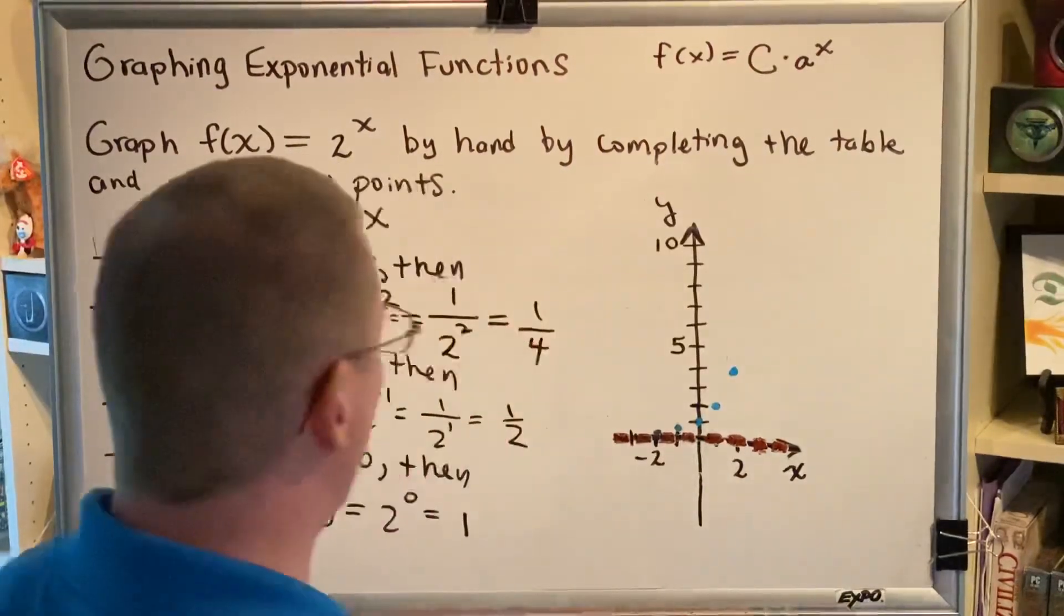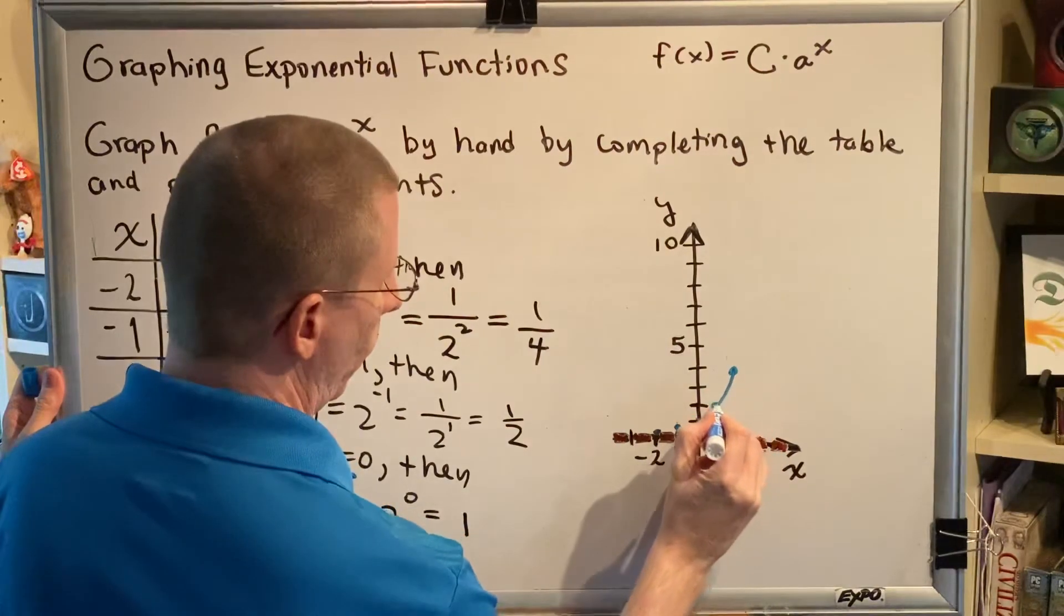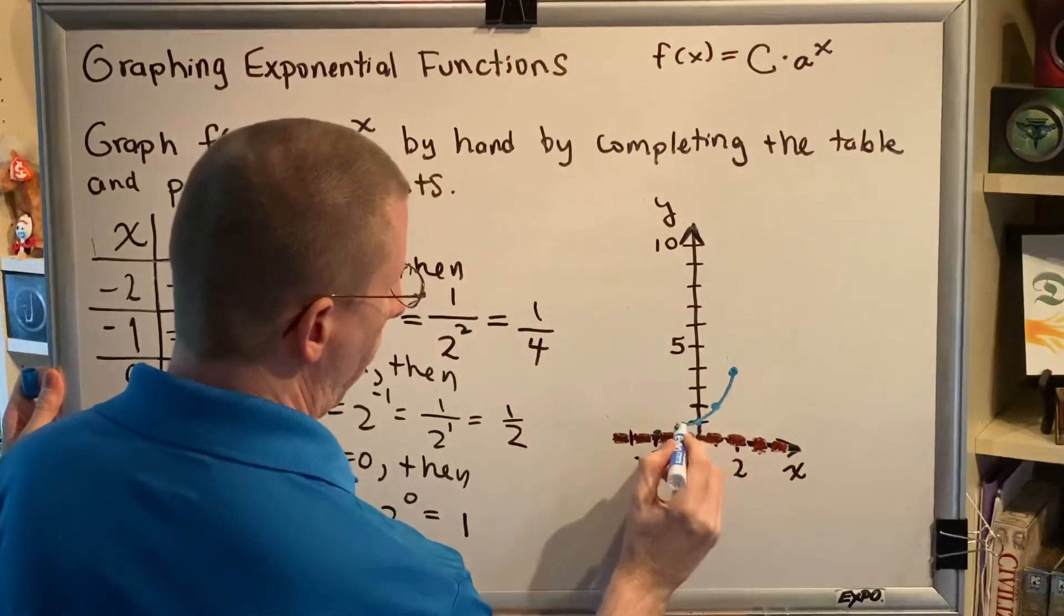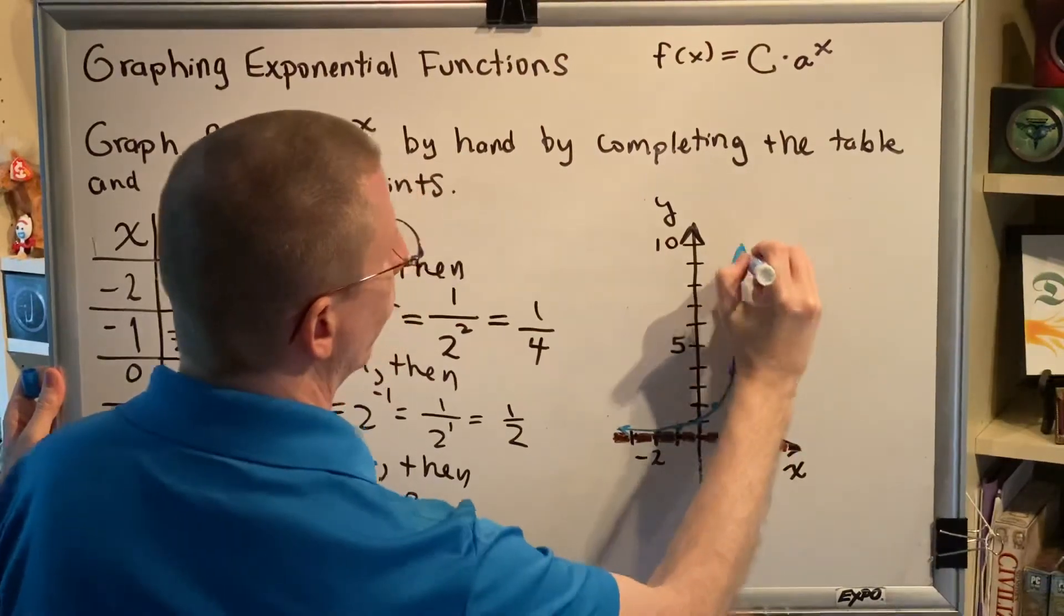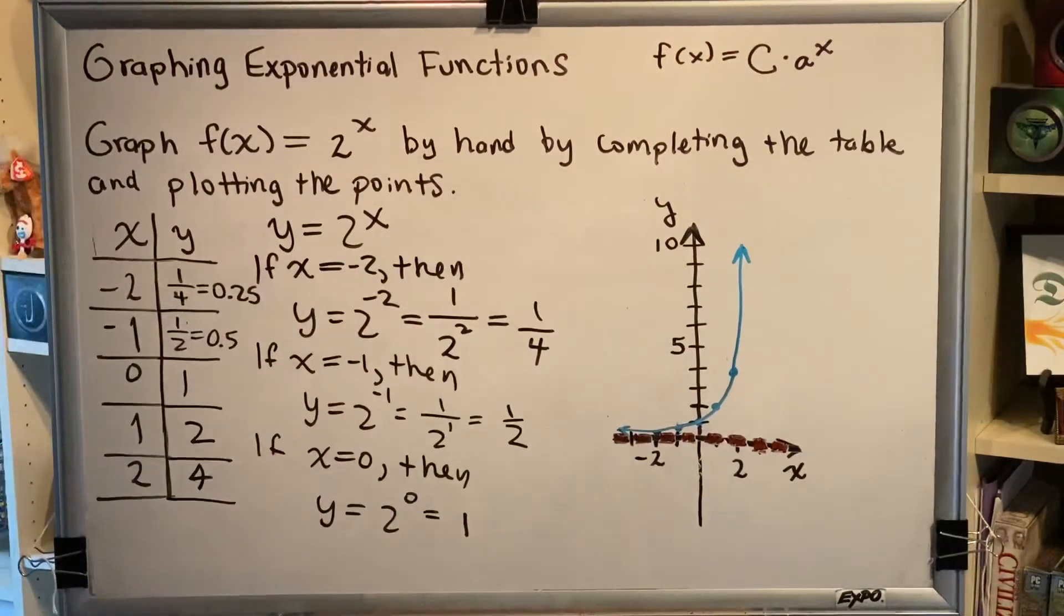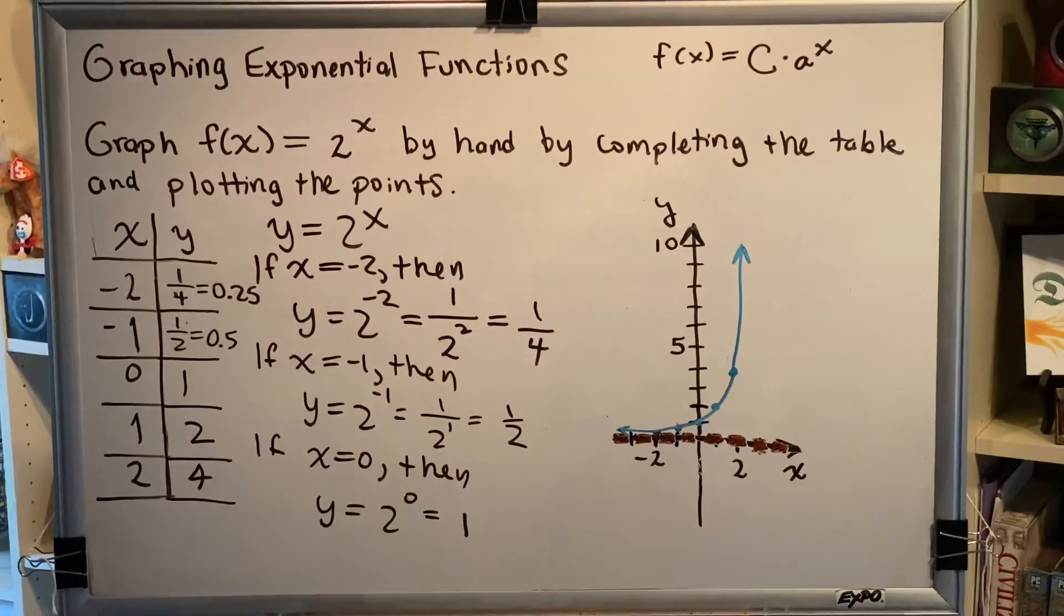Now all we have to do is connect all of our dots together. All right, and there we go. We have now created the graph of f(x) = 2^x.